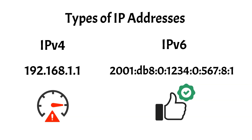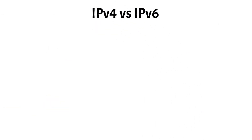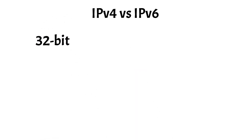Let's take a closer look at the differences between IPv4 and IPv6. IPv4 and IPv6 differ primarily in their address formats and capacity. IPv4 addresses are 32-bit numeric labels written in decimal format, allowing for about 4.3 billion unique addresses.